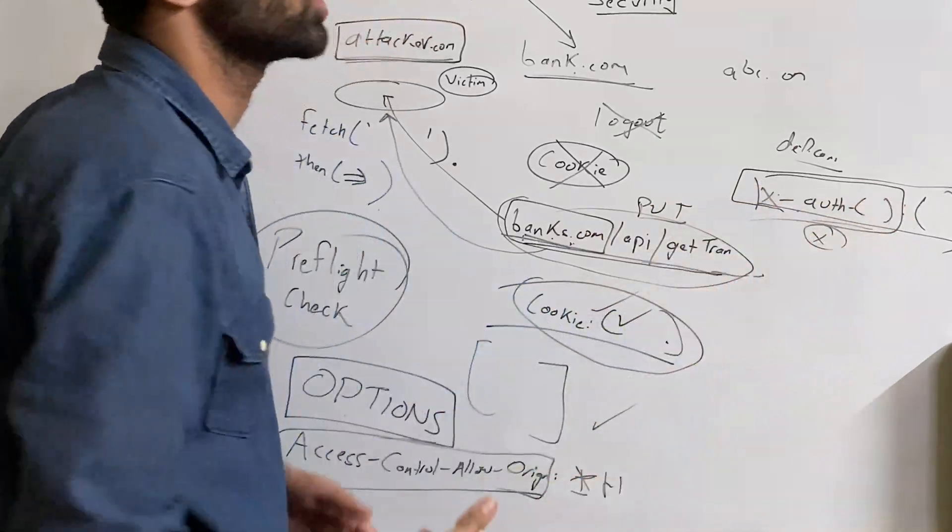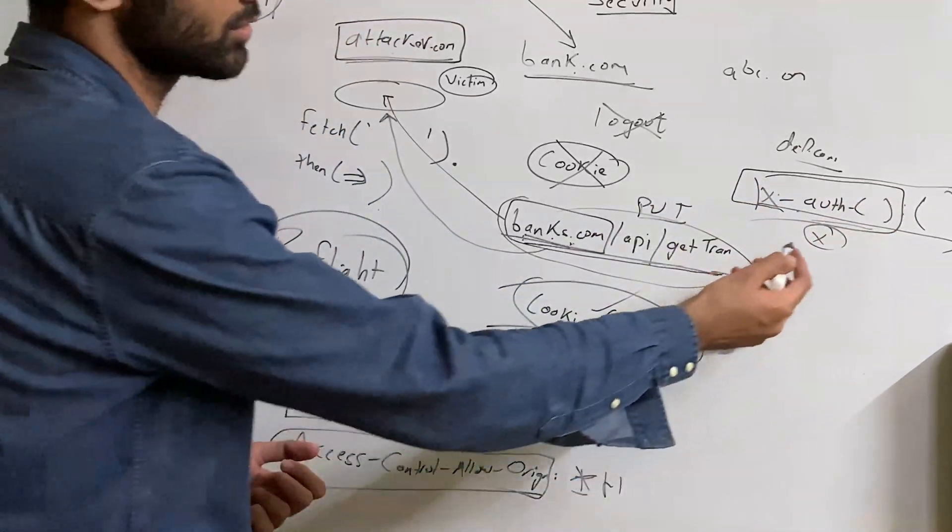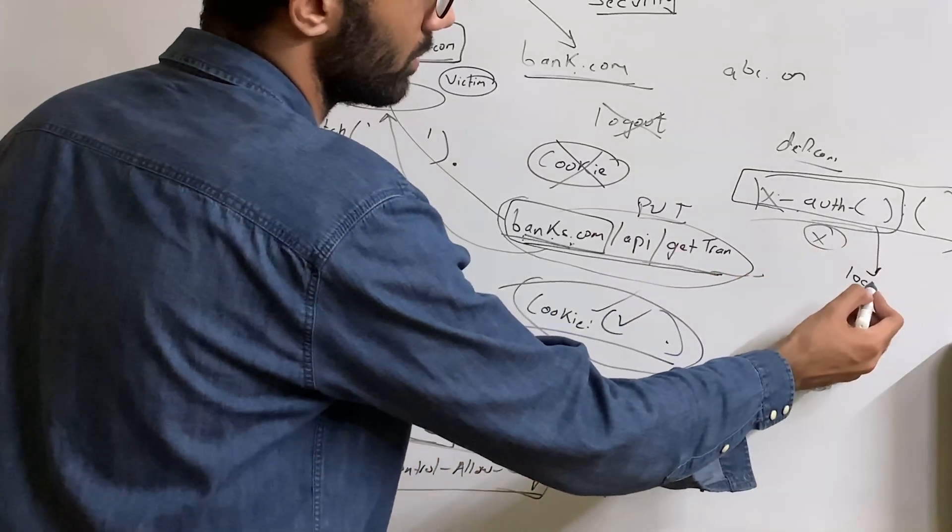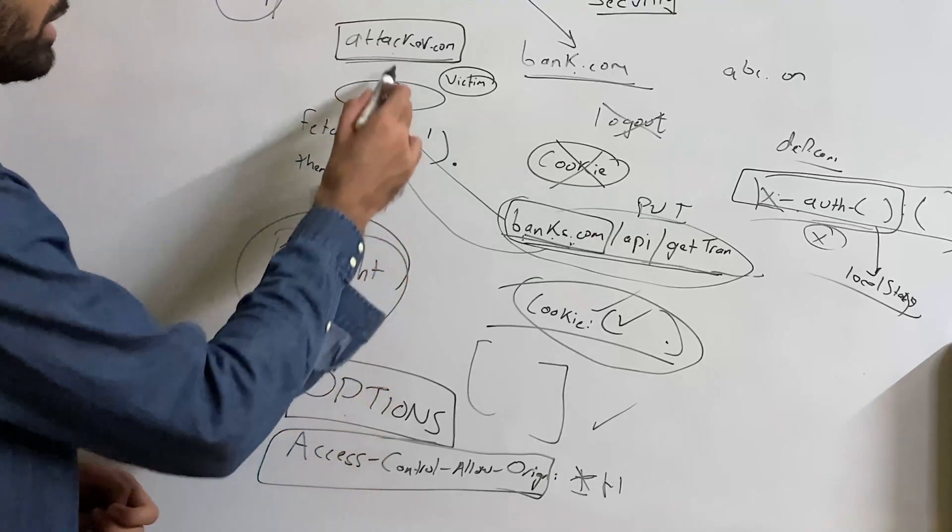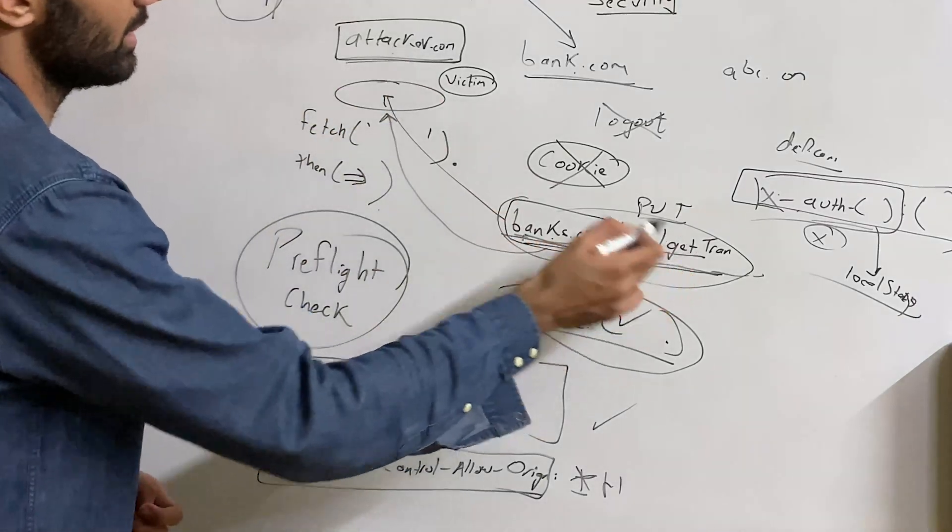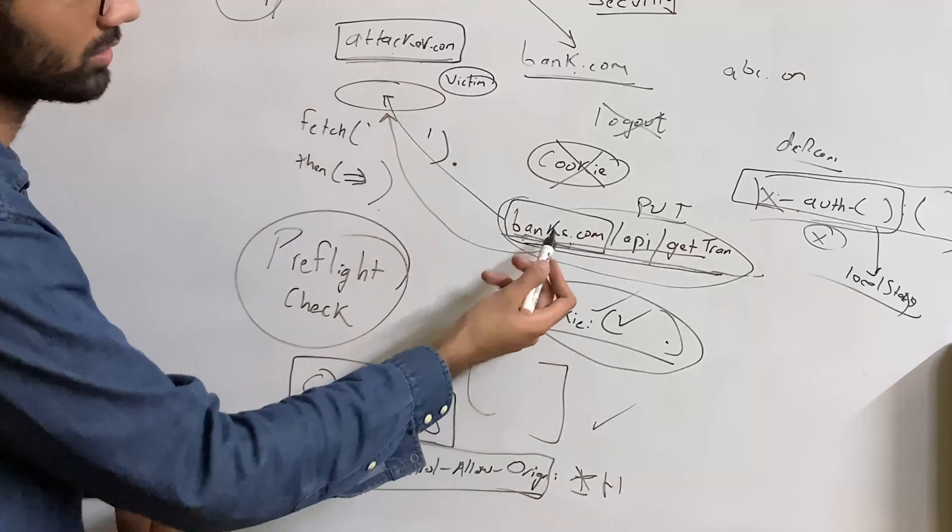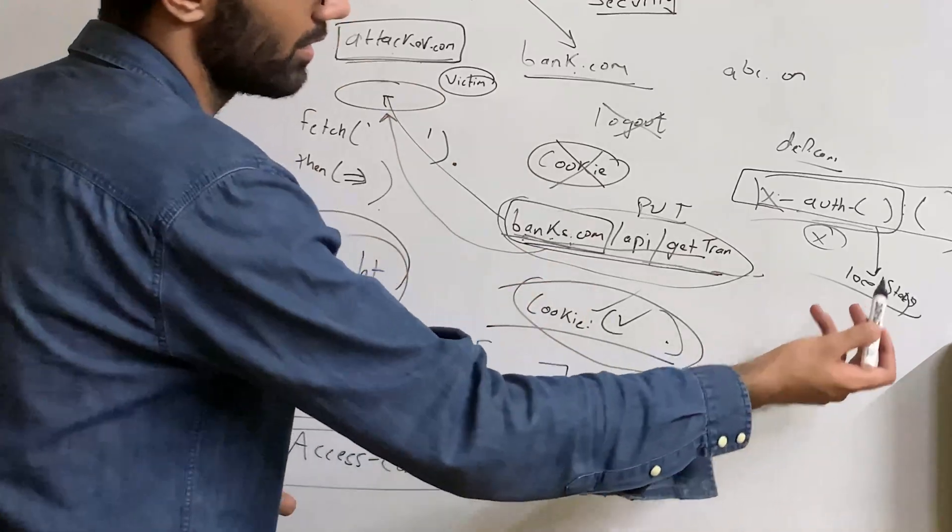This is populated on the front end by JavaScript code and this is stored in local storage, so you cannot really access cross-platform local storage and stuff like that. You can call this API from attacker, but you cannot access the local storage of this.